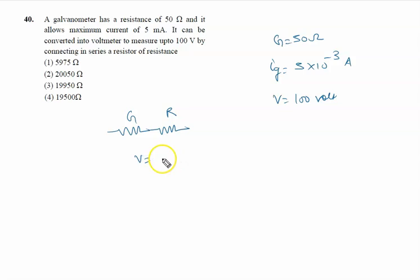We all know very well, V given by Ig times net resistance G plus R. V is 100 volt, Ig is 5 × 10 to the power minus 3, means 5 upon 1000. Galvanometer resistance is 50 plus R, we have to calculate.